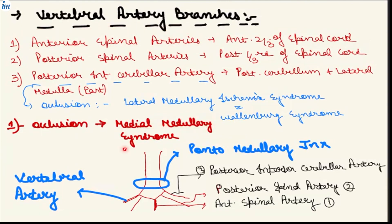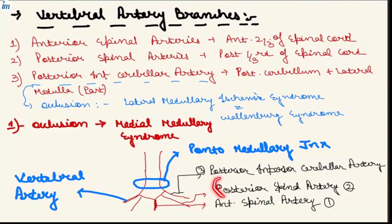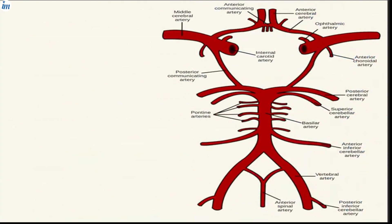If the anterior spinal artery gets blocked, we have medial medullary syndrome. To summarize vertebral artery branches: anterior spinal artery block leads to medial medullary syndrome; posterior spinal artery supplies one-third of the spinal cord; and posterior inferior cerebellar artery occlusion leads to lateral medullary ischemia or Wallenberg syndrome.